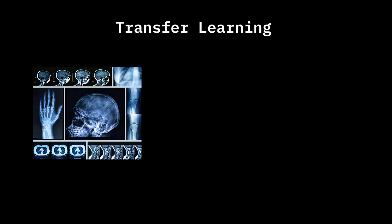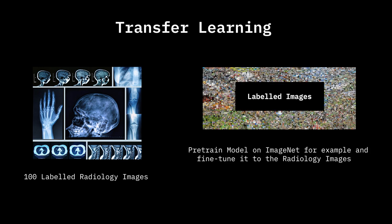Similarly — stealing Andrew Ng's example — let's say I have a small labeled dataset of 100 radiology images and I want to train a network for radiology diagnosis. What we can do is take a gigantic labeled image dataset containing millions of labeled images that are not radiology images, pre-train a model on that, and then fine-tune that model on the 100 radiology images for my task. The reason this idea works is that it takes advantage of the very fundamental structure of neural networks, which is a hierarchical structure.